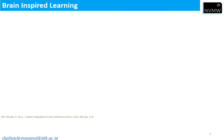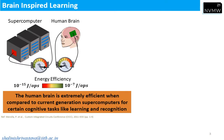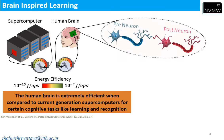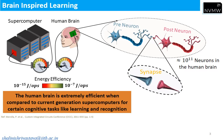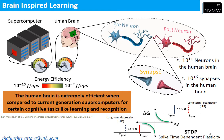Brain-inspired learning: I will explain what a synapse is. Compared to the human brain, a supercomputer based on von Neumann architecture is less energy efficient and requires more area. The human brain consists of a network of neurons, with about 10^11 neurons. These neurons are connected through synapses, and there are about 10^15 synapses in the human brain. The connectivity of neurons is defined by the conductance change in the synapse.